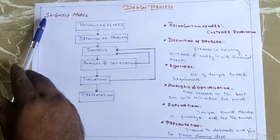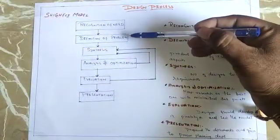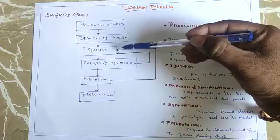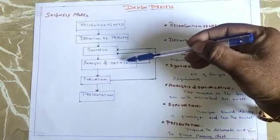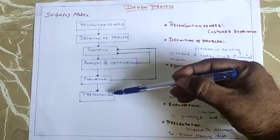There are seven categories. First is recognition of need. Second is definition of problem. Third is synthesis. Fourth is analysis and optimization. Sixth is evaluation. And seventh is presentation.